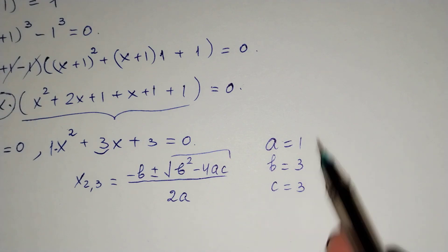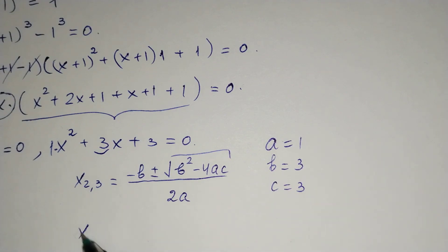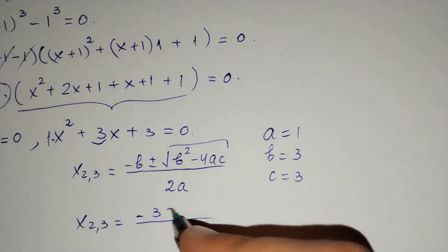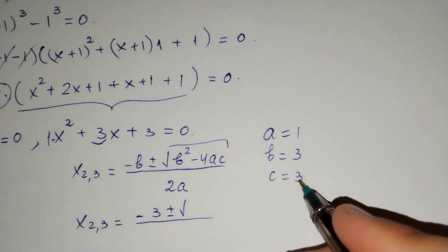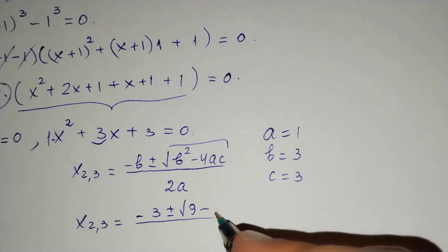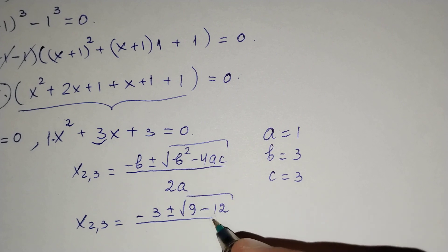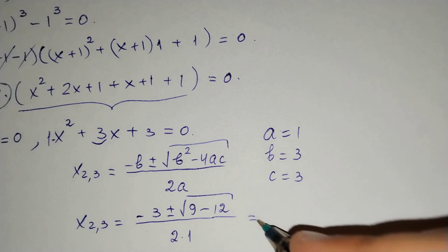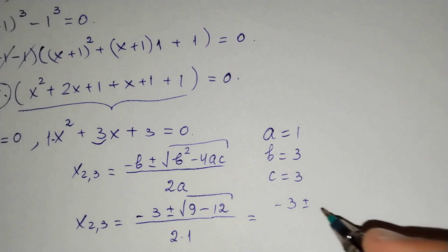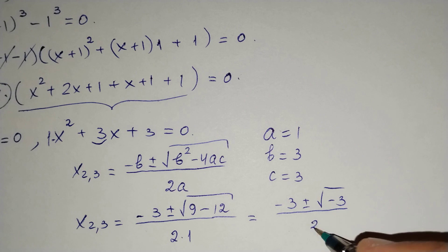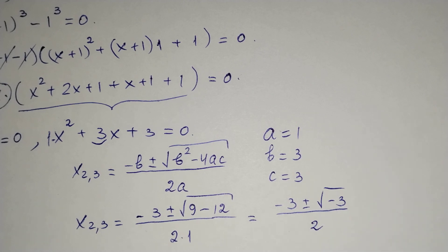Substituting in, x₂ and x₃ equal minus 3 plus or minus square root of 3² minus 4 times 1 times 3 over 2 times 1. That gives minus 3 plus or minus square root of 9 minus 12 over 2, which equals minus 3 plus or minus square root of minus 3 over 2.